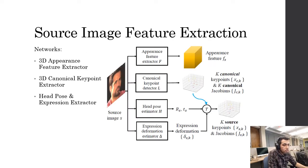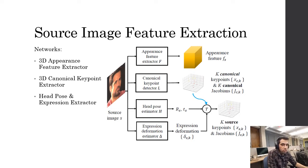In the source image feature extractor, three separate neural networks are used to extract identity-specific information. The networks are: the 3D appearance feature extractor, the 3D canonical key point extractor, and the head pose expression extractor. The appearance feature extractor, also known as network f, extracts features from the image to a new space. The canonical key point network outputs a set of 3D points in canonical space, and the last network extracts the pose — rotation and translation matrices — and the expression deformation information from that image. By combining rotation and expression deformation with the canonical key points, we detect where the K source key points and their Jacobians are located.